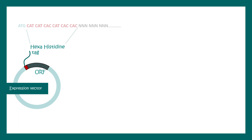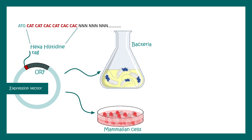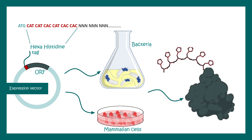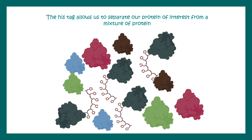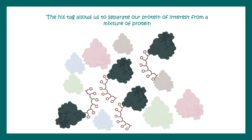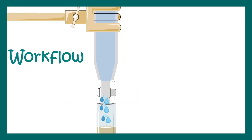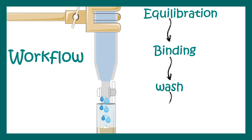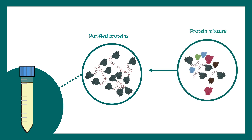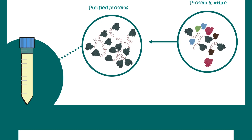In this method a histidine tag is incorporated at the genetic level into an expression vector, and then it is transfected into cells — either mammalian cells or bacteria. When we lyse these cells and try to purify the protein, our protein will carry this hexahistidine tag which can separate it from other proteins in the mixture. Thereby we can isolate our protein of interest with column chromatography, and our protein of interest can easily be purified from a pool of proteins using this affinity purification methodology.